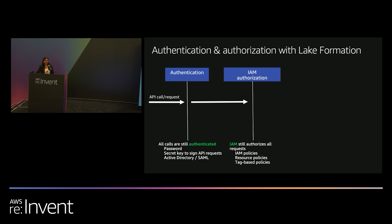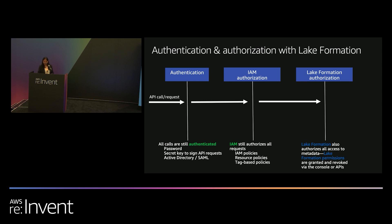Once you authenticate yourself, you need to authorize for the actions you'll be performing on resources in AWS. When you think about the Lake Formation model, IAM still authorizes all requests with respect to API calls. However, it also provides fine-grained access control to your data assets — mainly metadata and data — so you can control access at a much more granular level.